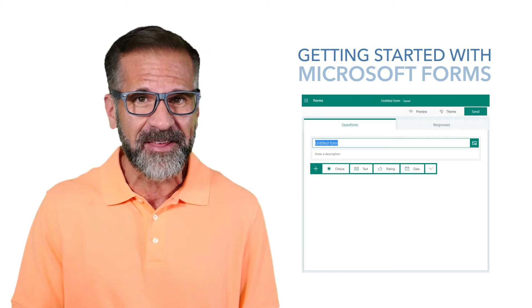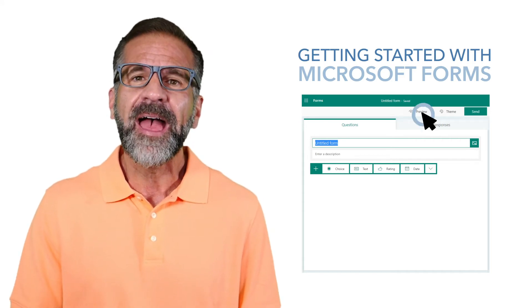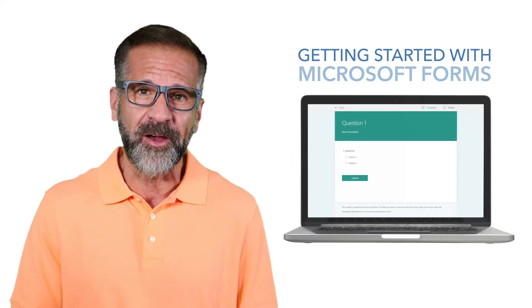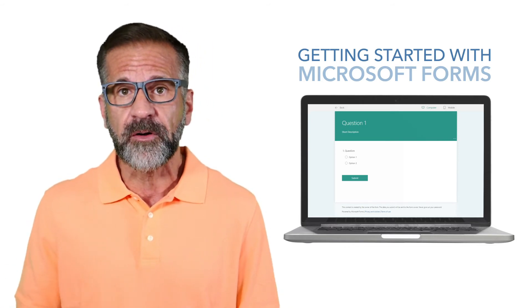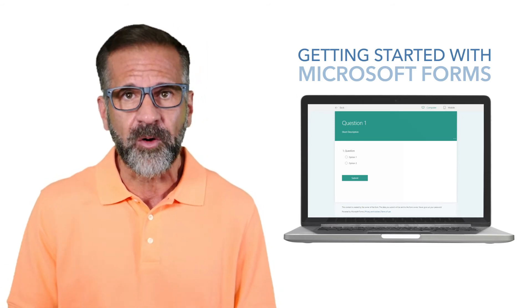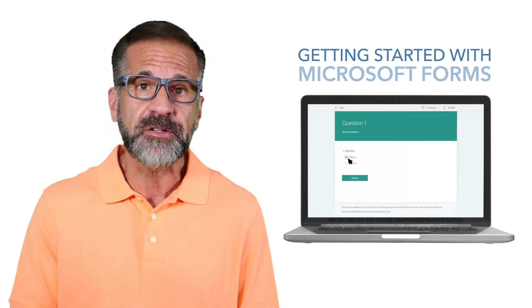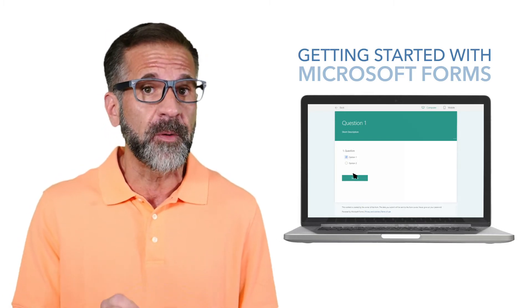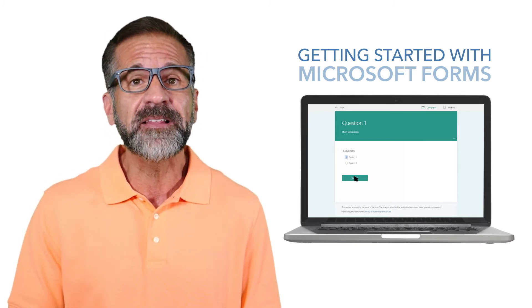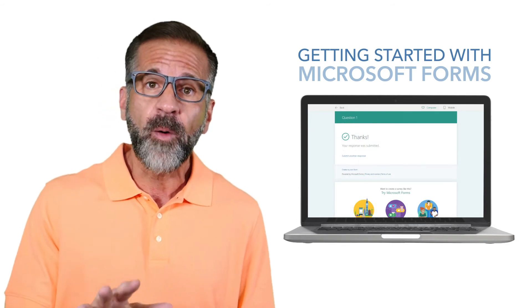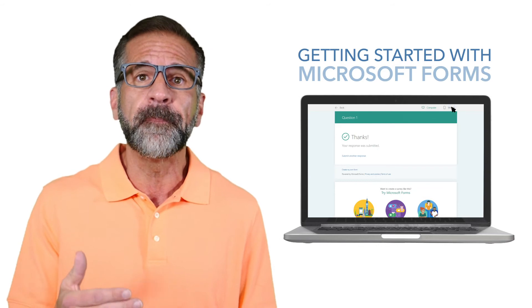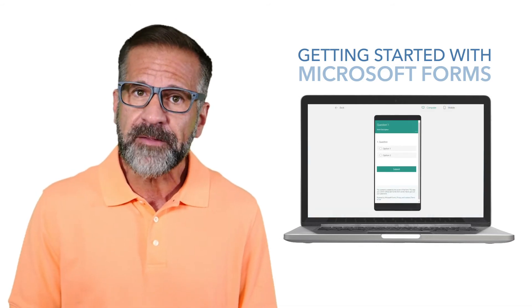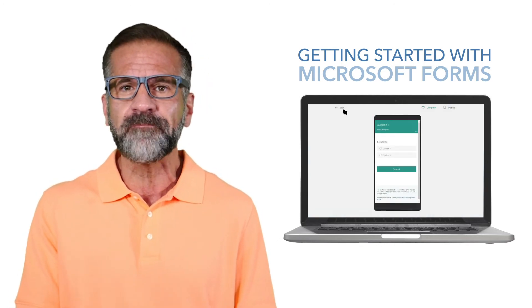After you've selected the type of question and finalized the details, click 'Preview' at the top of the design window. This will enable you to see how the form will look on a computer. You may wish to test your form — key in answers in preview mode and then select 'Submit.' If you want to see how your form will appear on a mobile device, simply click 'Mobile.' Once you're done previewing and satisfied with your form, click 'Back.'